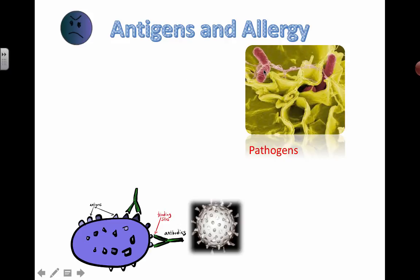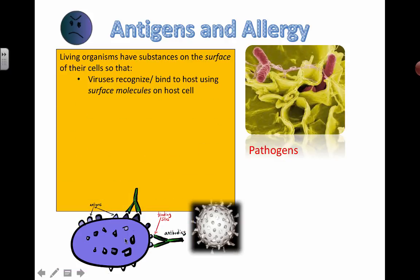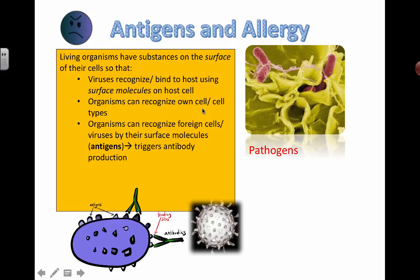You can see some bacterial cells here. All living things, all organisms, actually have these little proteins on the surface of their cells. They're called antigens, and it's the basis upon which we can recognize foreign organisms or foreign particles inside our body. We can also tell the difference between our own cells and other types of cells.